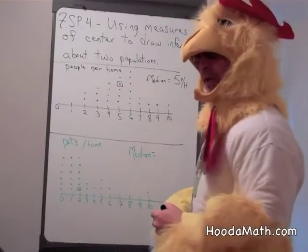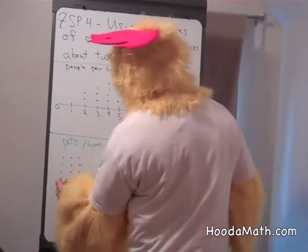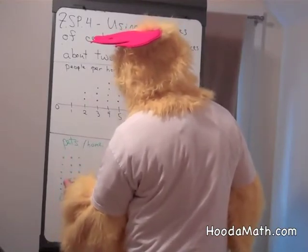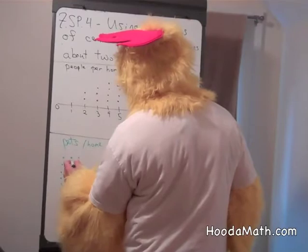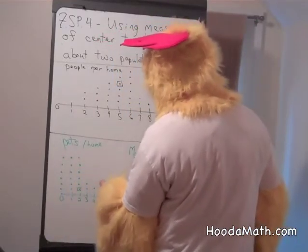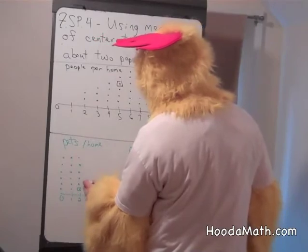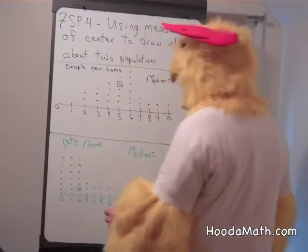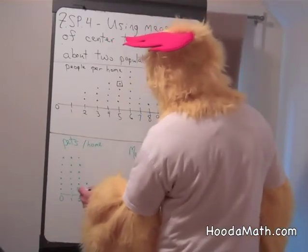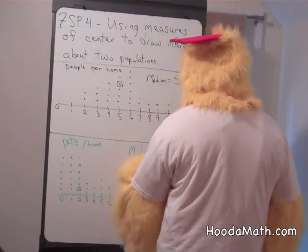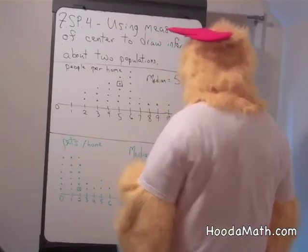Let's see what it is with pets. 1, 2, 3, 4, 5, 6, 7, 8, 9, 10, 11, 12, 13. Or going this way, 1, 2, 3, 4, 5, 6, 7, 8, 9, 10, 11, 12, also 13. So the thirteenth number in this case is two pets per home.